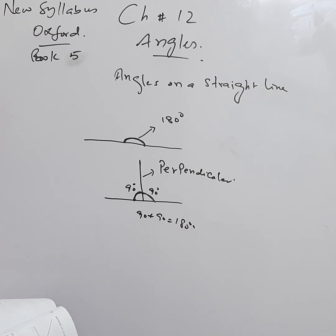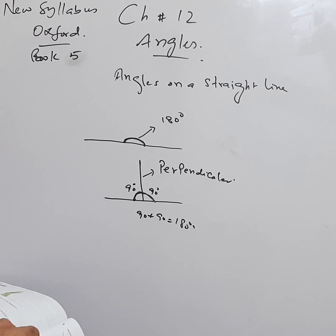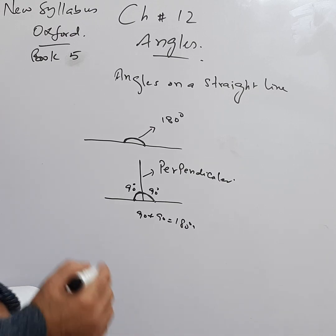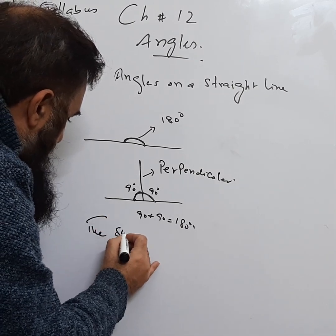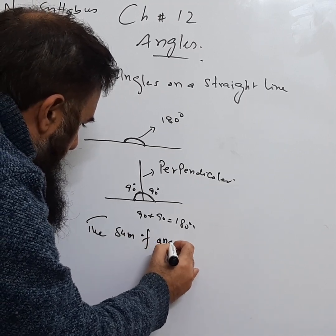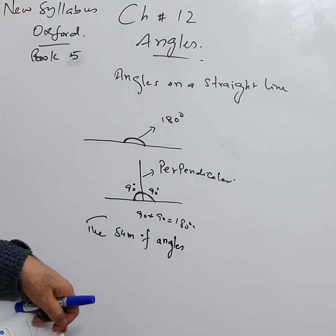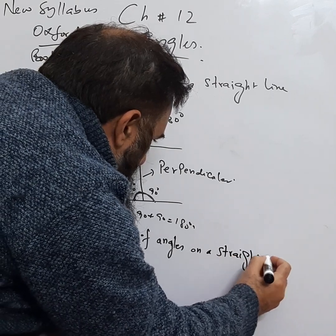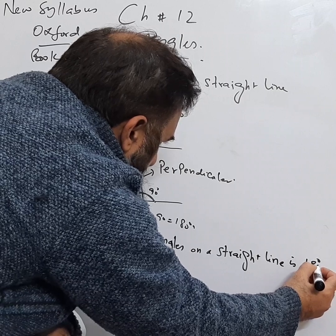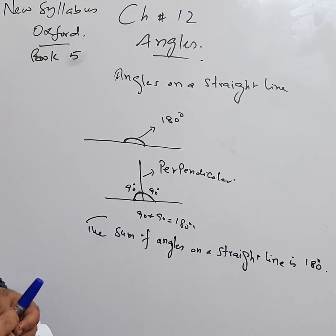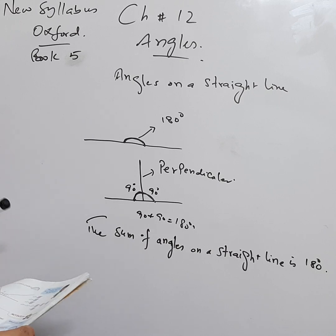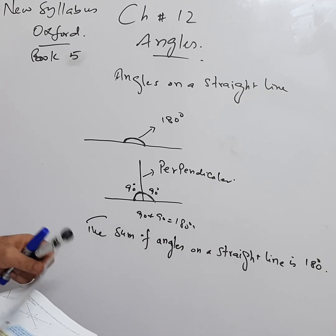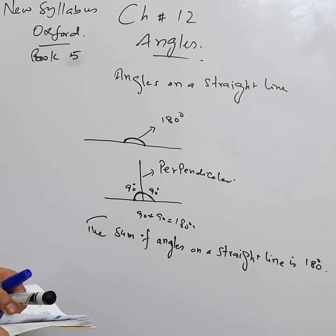On page number 239, there are two points with examples. The sum of angles on a straight line is equal to 180 degrees. We will study this topic in detail and will be doing it in the next video.